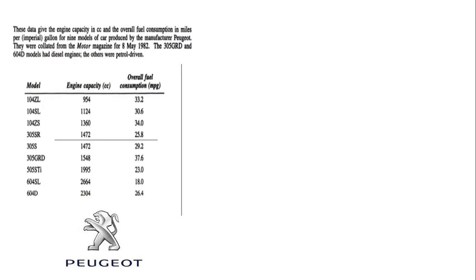So for example the 305 SR had an engine capacity of 1472 cubic centimeters and it got 25.8 miles per gallon. Suppose we were interested in analyzing the relationship that might exist between engine capacity and fuel consumption for Peugeot cars. We'd like to try to detect if there's any kind of association between those two variables.